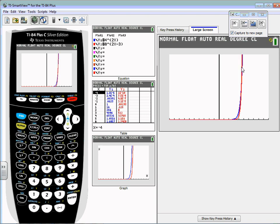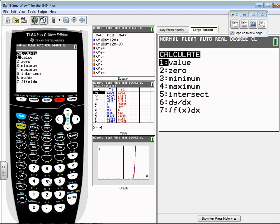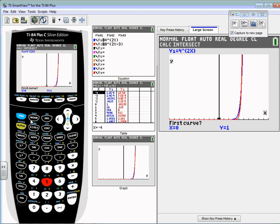To find that solution, it's second trace option number five, which is the intersect. I like to put my cursor where I think the intersect is and then just hammer on enter three times, which is always a nice technique. My first curve is y1, that's good. My second curve is y2, that's good. The guess, unless there's multiple intersections, it doesn't matter. It tells me that my intersection or the solution is when x is equal to 4.5.